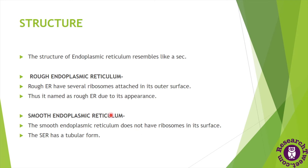Both types of endoplasmic reticulum have different structures. The rough endoplasmic reticulum has several ribosomes attached to its outer surface, giving it a rough appearance, while the smooth endoplasmic reticulum has no ribosomes on its surface. Additionally, the rough endoplasmic reticulum has a flat, cisternal structure, while the smooth endoplasmic reticulum has tubular forms or tubular structures.